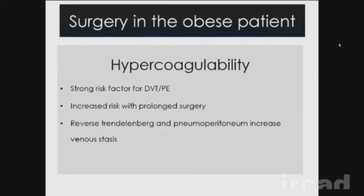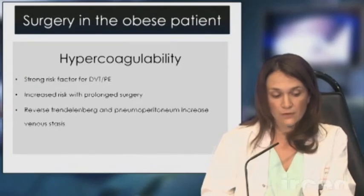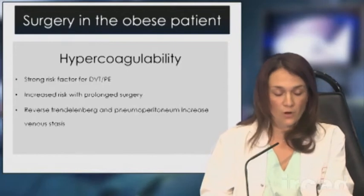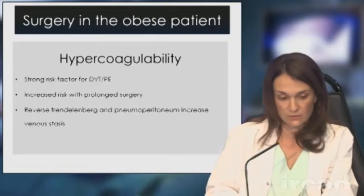Obese patients have a much higher risk factor for pulmonary embolism and deep venous thrombosis. The risk is increased if the surgery is prolonged, by the position during surgery — particularly reverse Trendelenburg, which is often used in these patients — and of course by the pneumoperitoneum if you are operating laparoscopically.